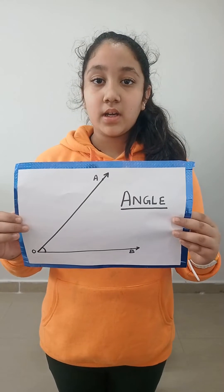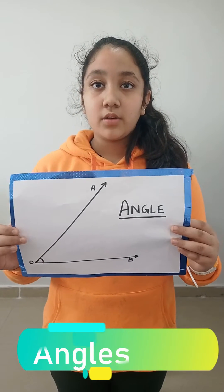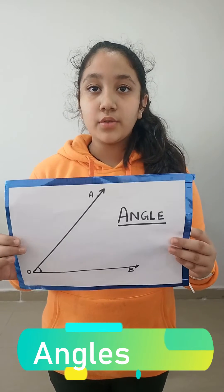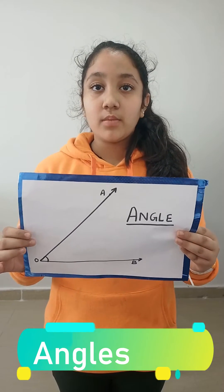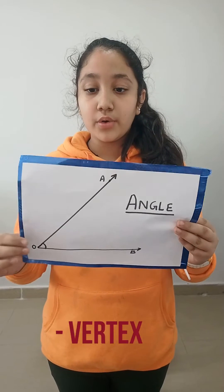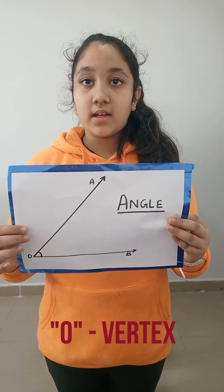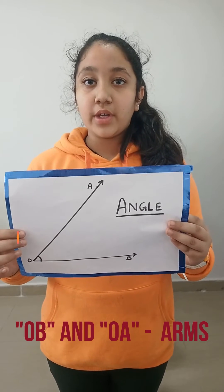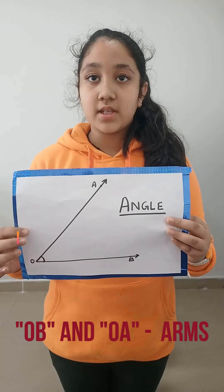Hello everyone, here are students of 5th B to tell about angles. Two rays with a common end point form an angle. O is the vertex of this angle, and OB and OA are the arms of this angle.